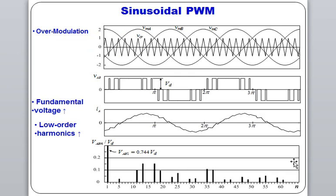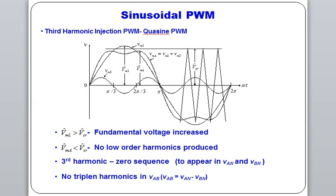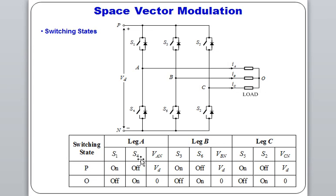If we talk about sinusoidal PWM, when the carrier signal is superimposed it can result in over-modulation — meaning the sinusoidal wave has more amplitude than the carrier wave. In that case, the fundamental voltage will increase and lower order harmonics will increase. To reduce harmonics in sinusoidal PWM, we use a technique called cosine PWM, in which we inject a third harmonic wave. In the VAB line voltage (VAN minus VBN), there will be no triplen harmonics in the line voltages — this is the benefit of the third harmonic injection.